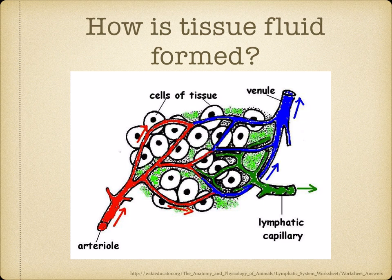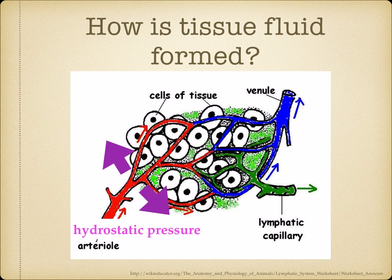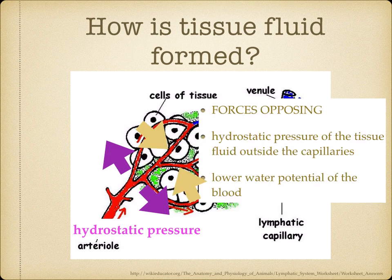How is tissue fluid formed? Blood pumped by the heart passes along the arteries and then into narrower arterioles, and then finally into capillaries. This creates a pressure called the hydrostatic pressure at the arterial end of the capillary, which tends to force the liquid out of the blood. The outward pressure is opposed by two other forces: the hydrostatic pressure of the tissue fluid outside the capillaries, which prevents outward movement, and the lower water potential of the blood due to plasma proteins, which pulls water back into the capillaries.